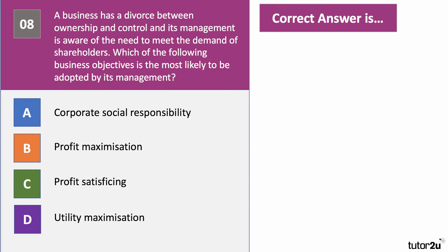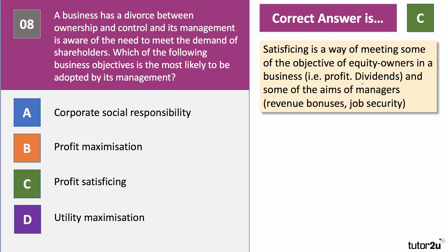Question eight. A business has a divorce between ownership and control, and its management is aware of the need to meet the demands of shareholders. Which business objective is most likely to be adopted by the management? The most likely objective is profit satisficing. Satisficing is one way of meeting some of the objectives of the shareholders — they want some profit and dividends — but also some of the aims of managers who might prioritise revenue bonuses, job security, and status. Satisficing is an in-between price and output.